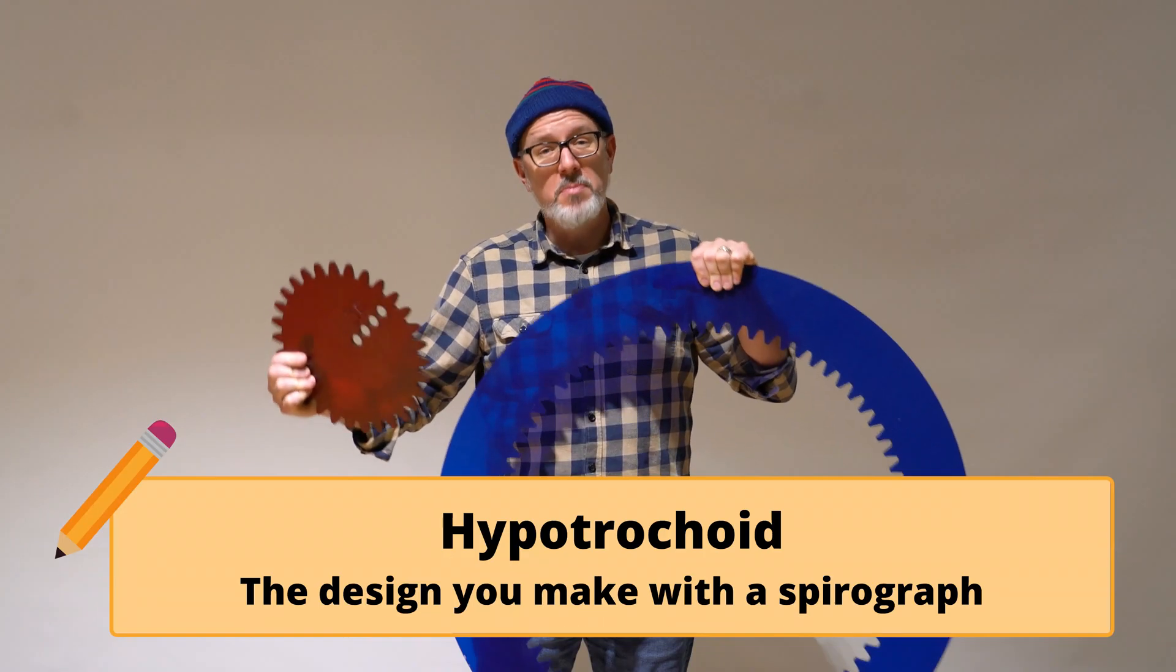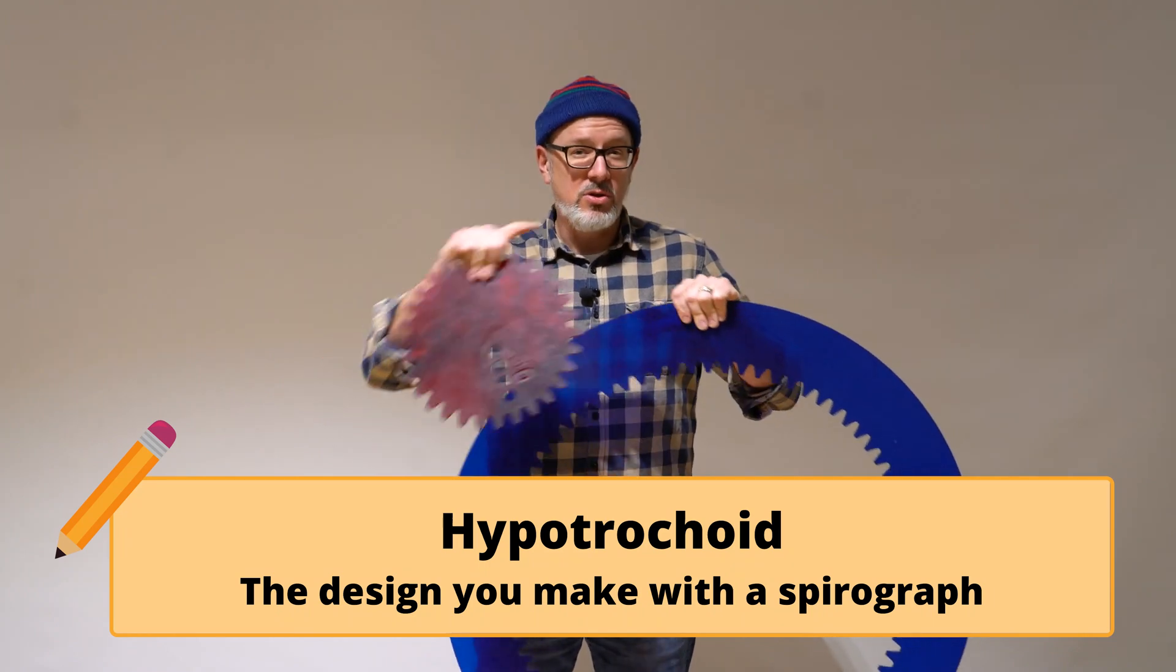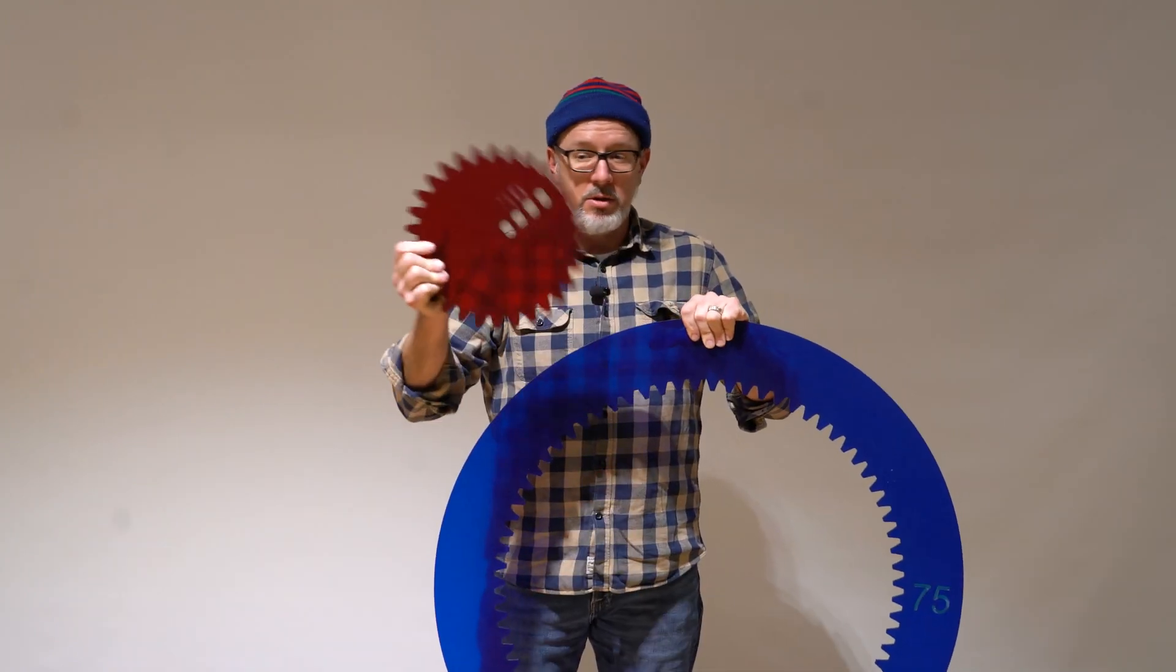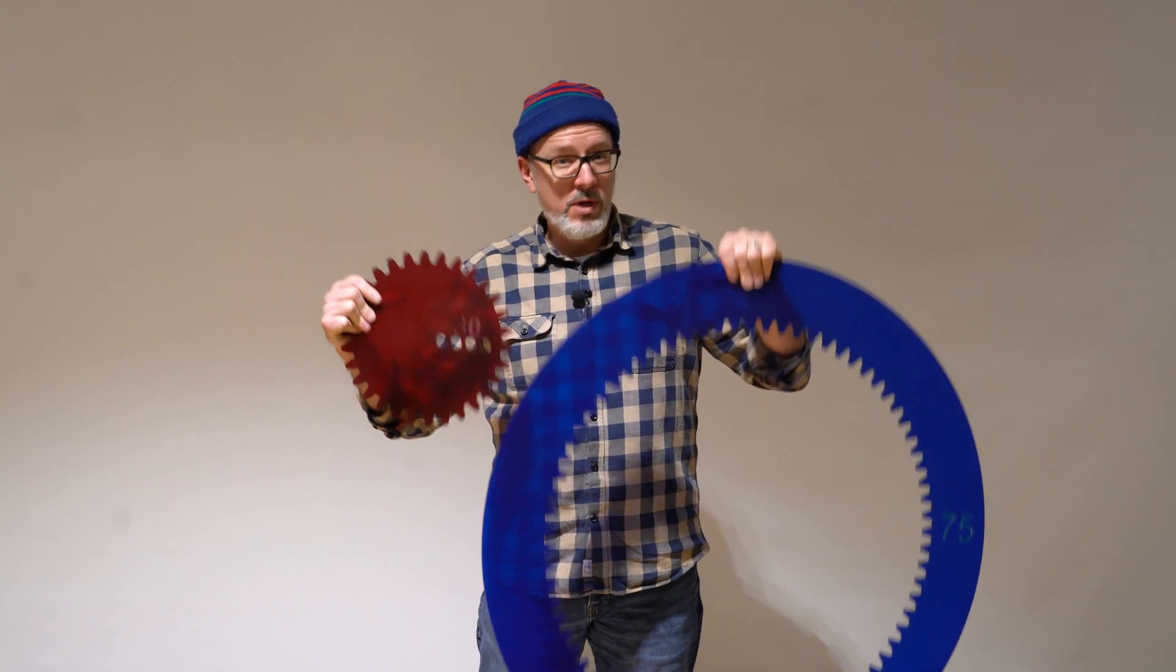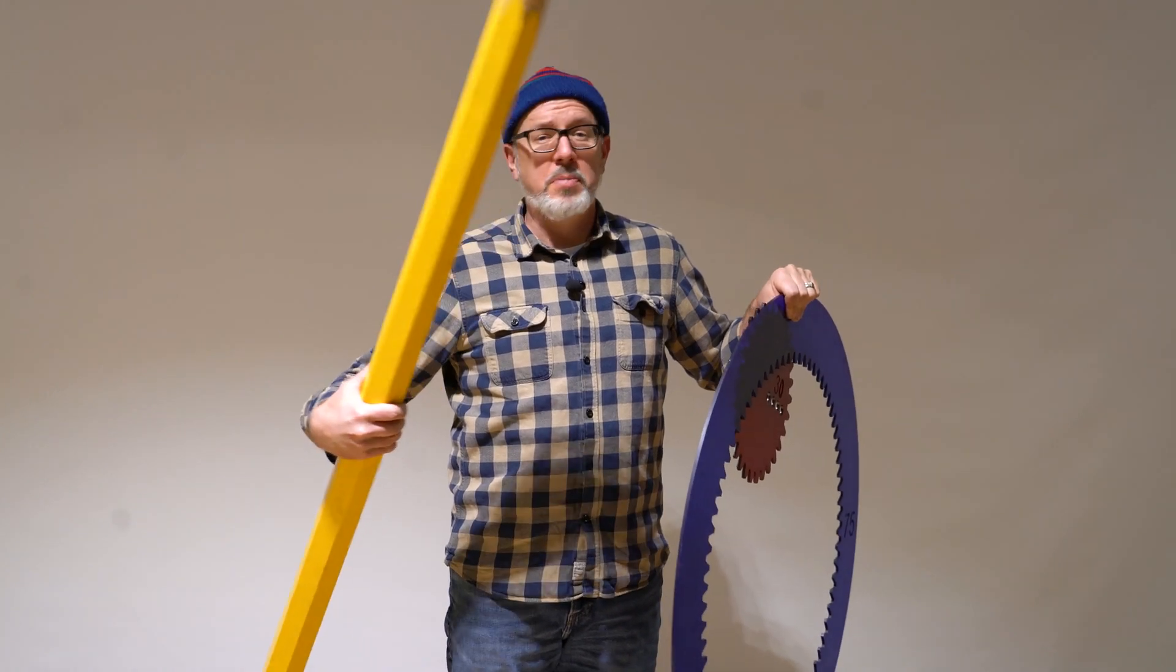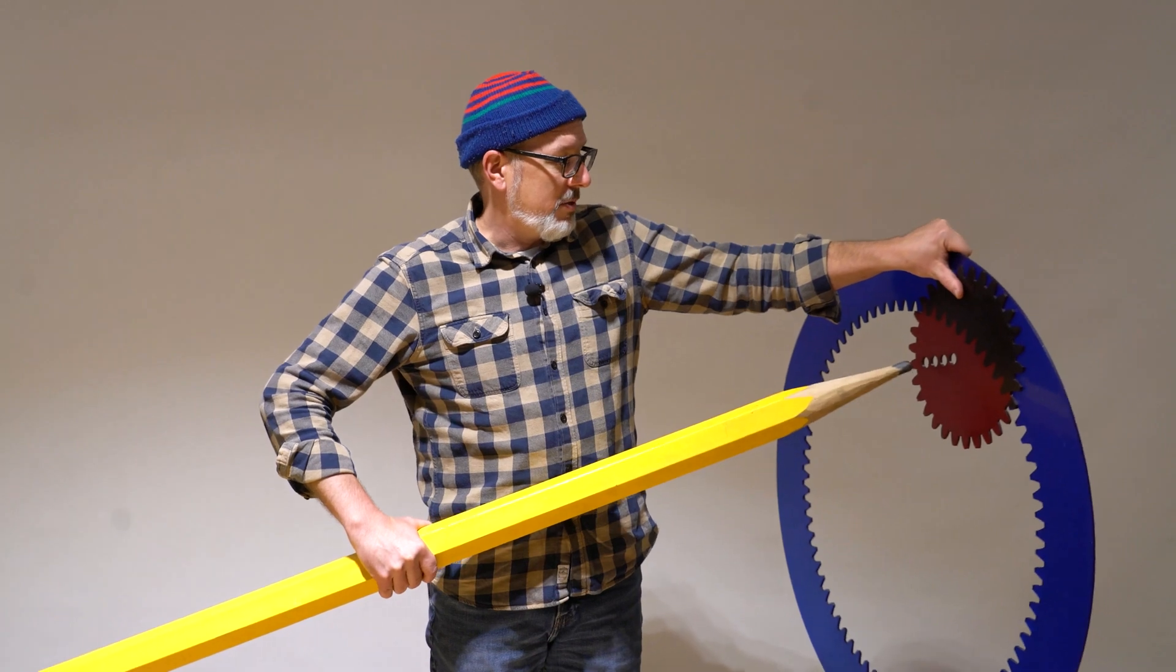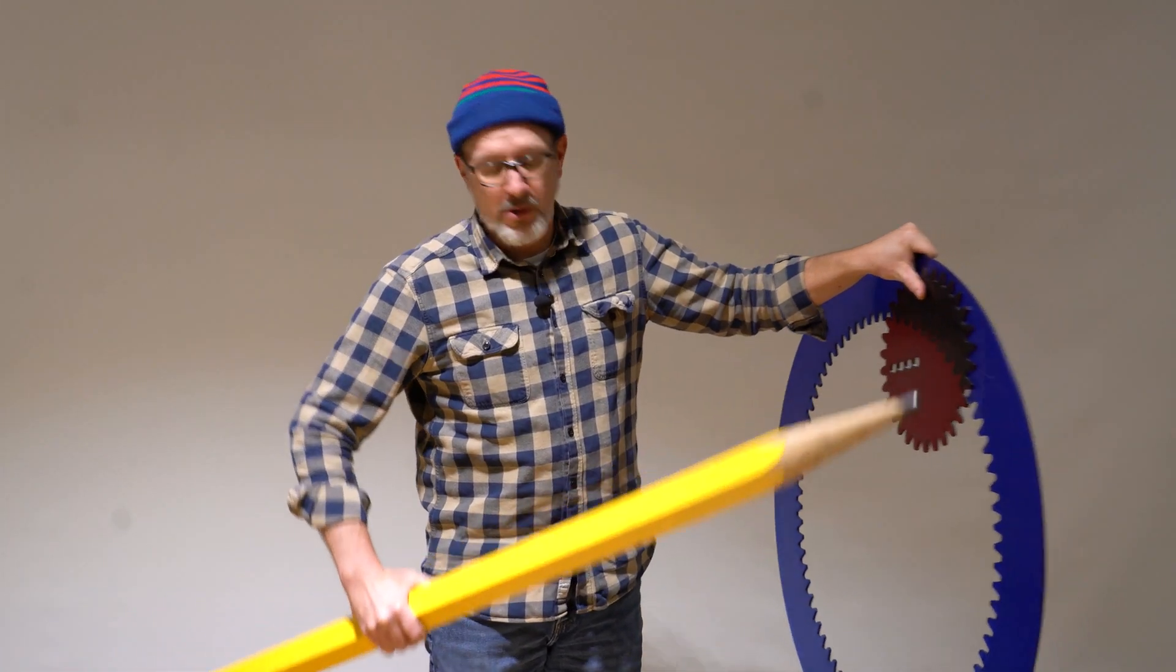The design you make with the spirograph is called a hypotrochoid, and it has a certain number of points on it, depending on what wheel you use and what ring you use. You also need to have a pencil or a pen or a colored pencil or a crayon. The main thing is it has to be able to fit through the holes in the spirograph wheel.